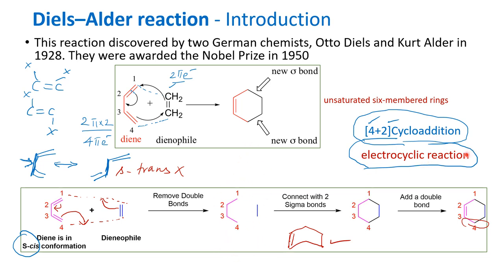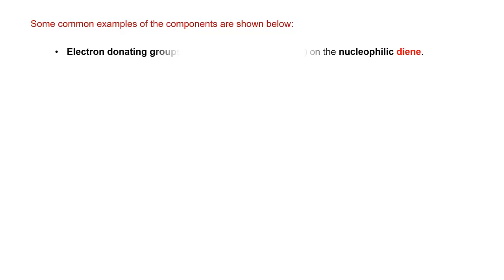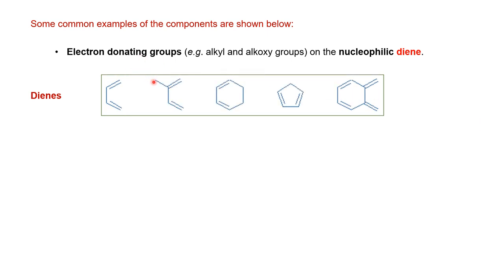Now let us look at what kinds of substituents favor the Diels-Alder reaction. For acyclic dienes, the system can equilibrate between S-cis and S-trans, but S-cis is needed for the reaction. Cyclic systems are rigid and already locked in S-cis, so they react more readily. If there is an electron-donating group — such as an alkyl group or an alkoxy group — on the diene, it favors the reaction.